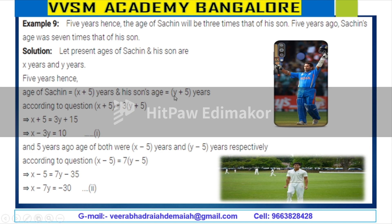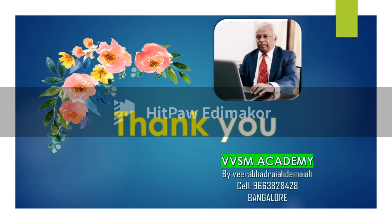According to the question, x plus 5 is equal to 3 into (y plus 5). Simplifying the equation, you will get x minus 3y is equal to 10, and x minus 7y is equal to minus 30. This is the pair of linear equations, formed with the help of the statements given.